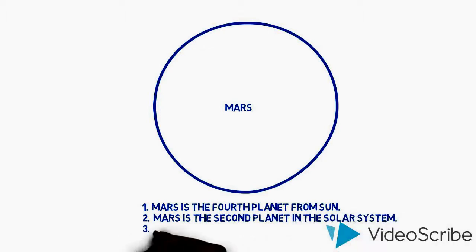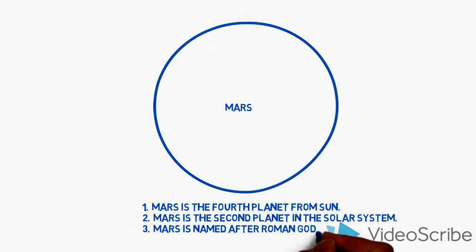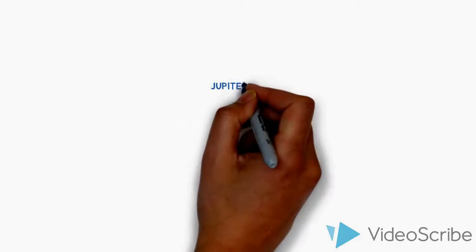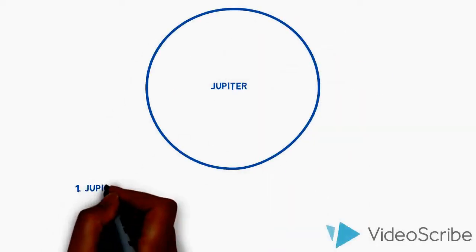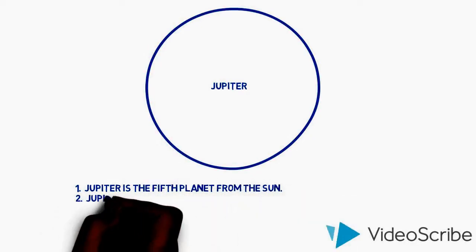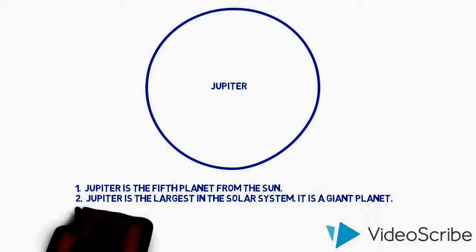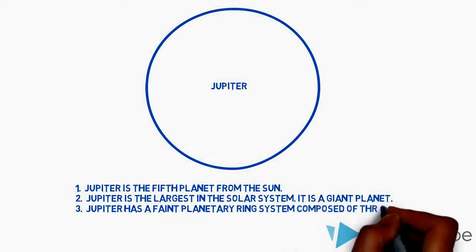Jupiter. Jupiter is the fifth planet from the Sun. Jupiter is the largest in the solar system. It is a giant planet. Jupiter has a faint planetary ring system composed of three main segments.